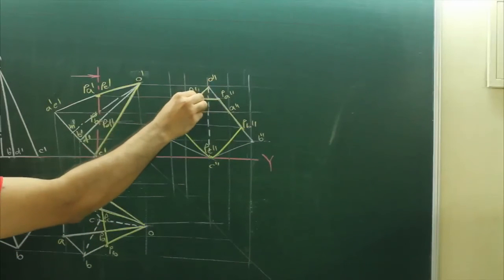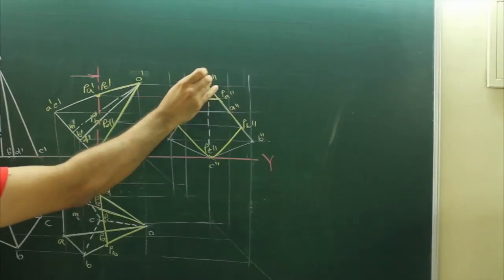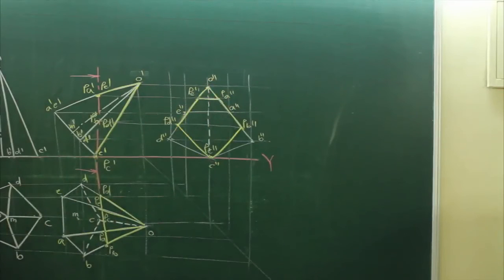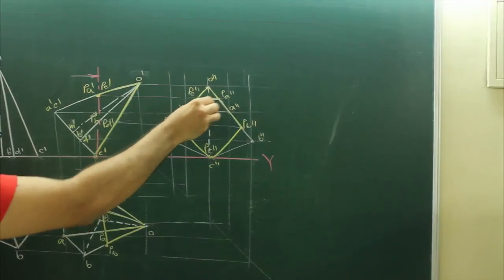And since they have asked us to retain apex, this portion will be down, lower portion will go away and this much will be hatched.